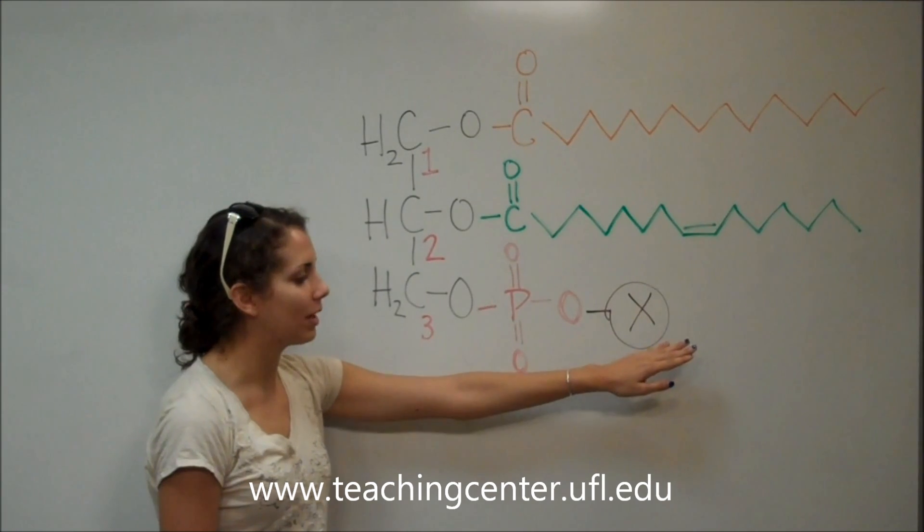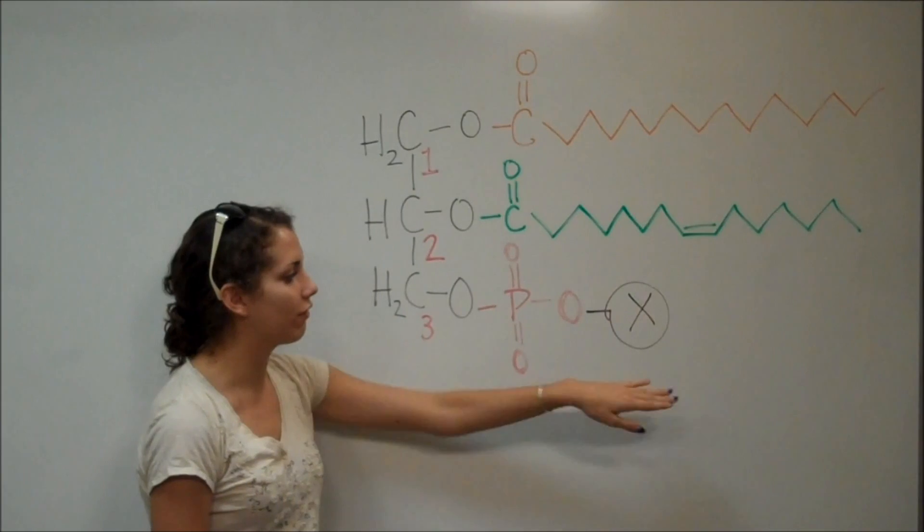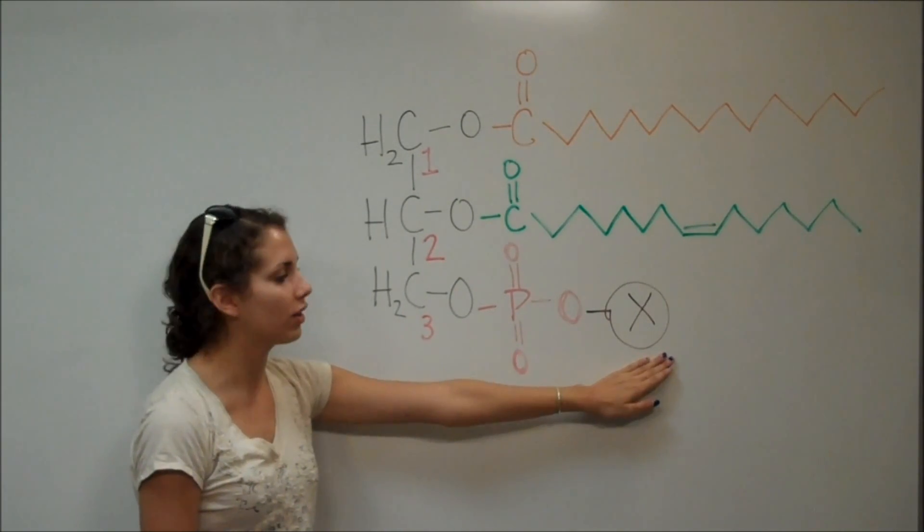So, if you substitute a hydrogen in here, this would be called phosphatidic acid, whereas if you replace X with a choline molecule, this would be called phosphatidylcholine.